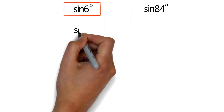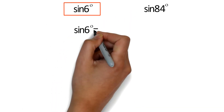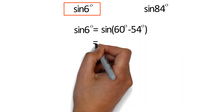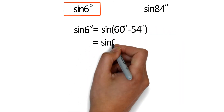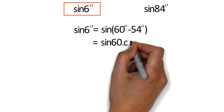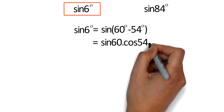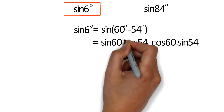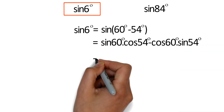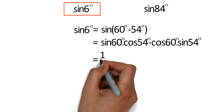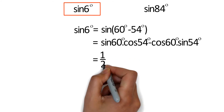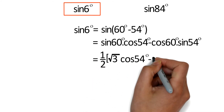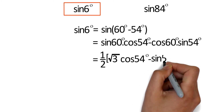sin 6° = sin(60° - 54°), which equals sin 60° cos 54° minus cos 60° sin 54°, which equals (1/2)(√3 · cos 54°) minus sin 54°.